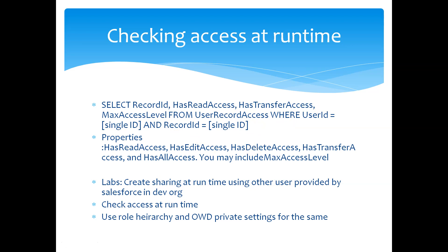Say you want to check it at runtime in a trigger, whether that person has got access. And I told you in Lightning components, you don't have sharing enabled by default. So you may have to use this in your controllers for the Lightning Aura controllers. The RecordId is the current ID. Basically you can do runtime sharing, and also check whether a person has record access using UserRecordAccess metadata.